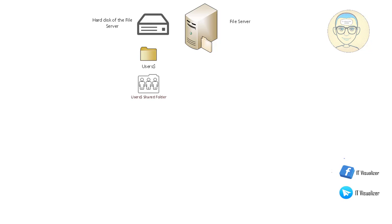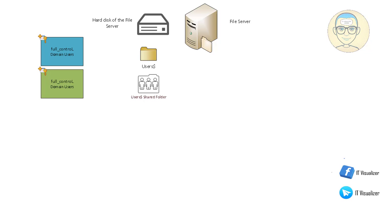We will share this main 'users' folder so all Active Directory users can reach it, and put certain permissions on it. The Active Directory built-in group 'domain users' — which contains all users in the domain — will be given full control. A PowerShell script called the home folder permissions script will create a subfolder for every user in the domain, named according to their Active Directory username. For example: a subfolder for Karim, one for Hulk, one for Thor — each named by their AD username.